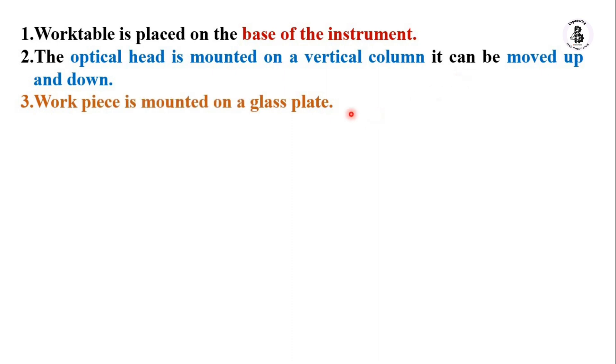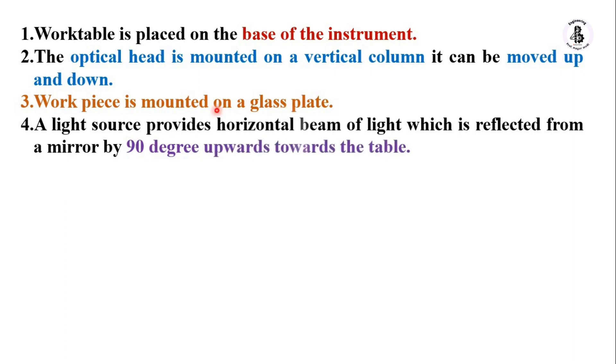Workpiece is mounted onto the glass plate. Then a light source provides the horizontal beam of light which is reflected from a mirror by 90 degrees, that will be upward towards the table, and that will also depend upon the measurement of an object.